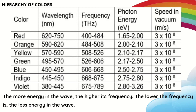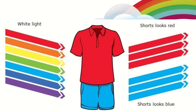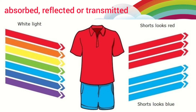We can say that the more energy in the wave, the higher its frequency. Why do we see colors? What determines the colors? The answer is frequency. We see different colors because our eyes react differently to electromagnetic waves of different frequencies. When light strikes an object, it may be absorbed, reflected, or transmitted.